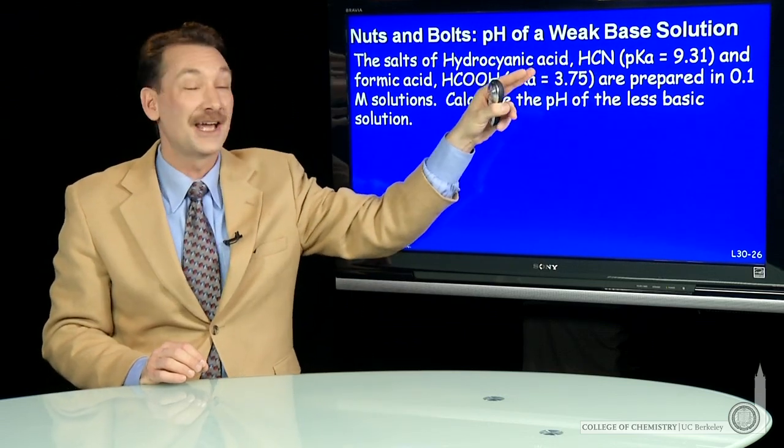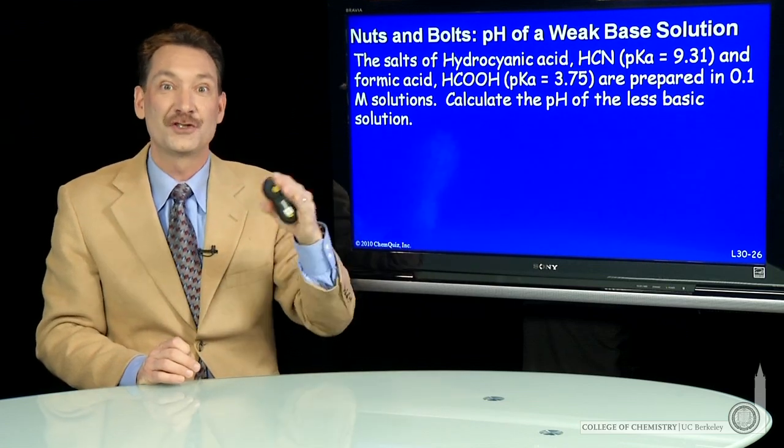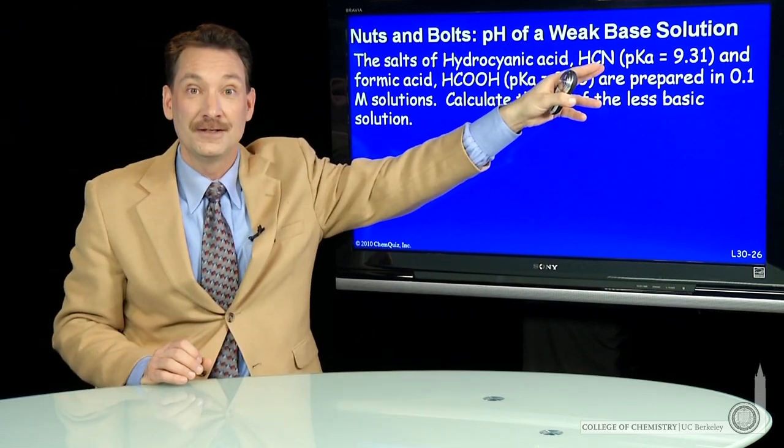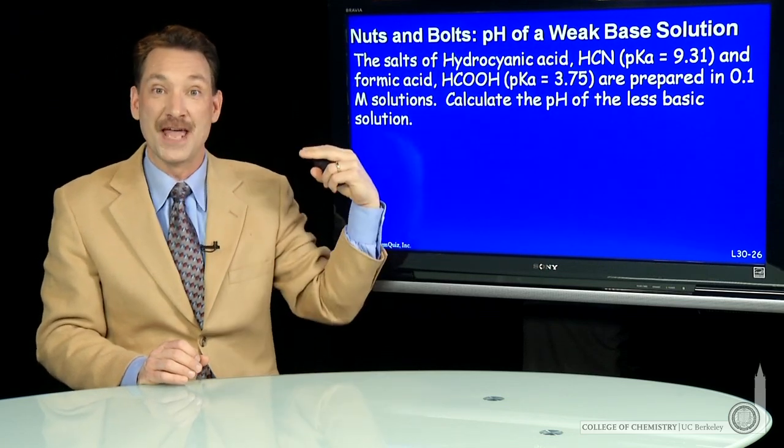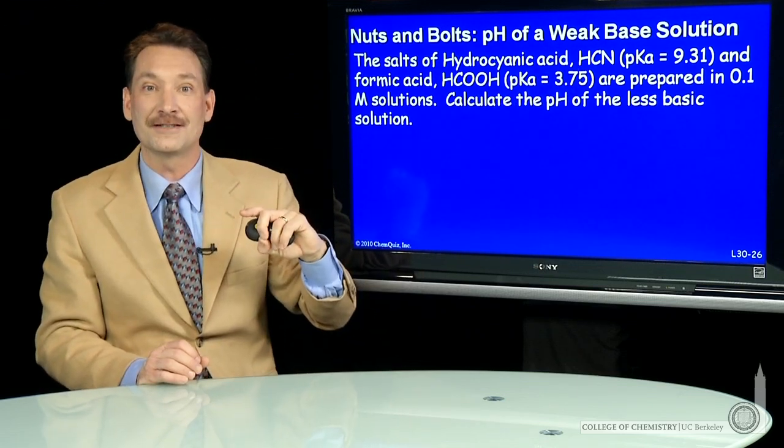So if you reacted hydrocyanic acid, HCN, with NaOH, the strong base sodium hydroxide, you would form sodium cyanide, the conjugate ions from the base and the acid. Sodium coming from the strong base and cyanide coming from the acid.